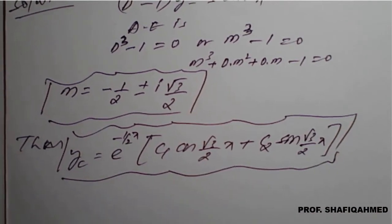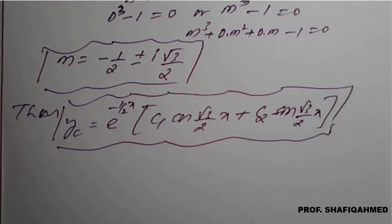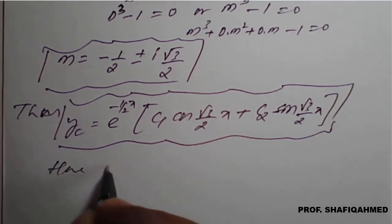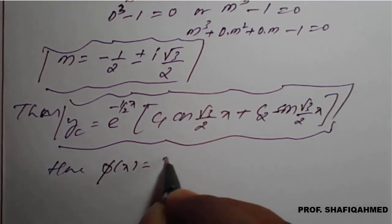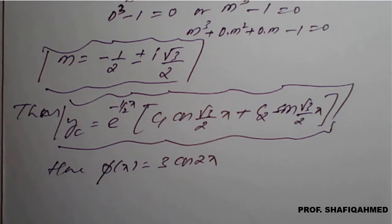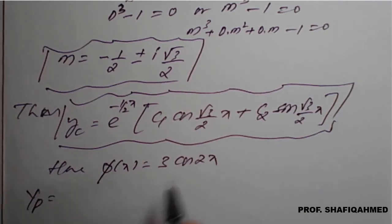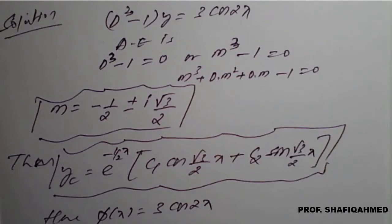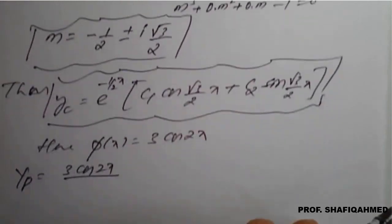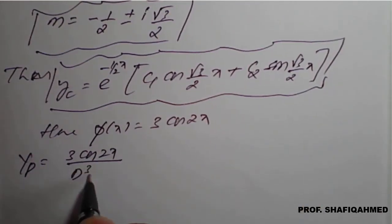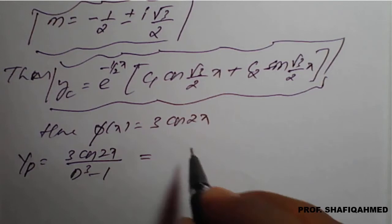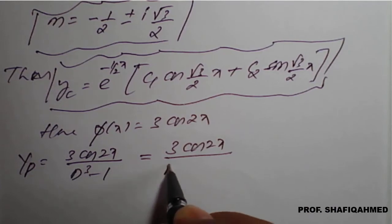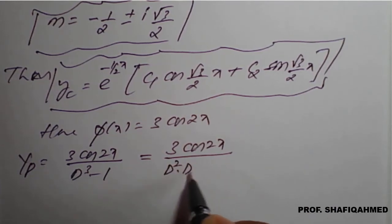Now, to frame the general solution, we need yp. The value of φ(x) is 3cos(2x). So yp = 3cos(2x) / (d³ - 1). I will write d³ as d²·d, so the denominator becomes (d²·d - 1), because I want to replace the value of d².